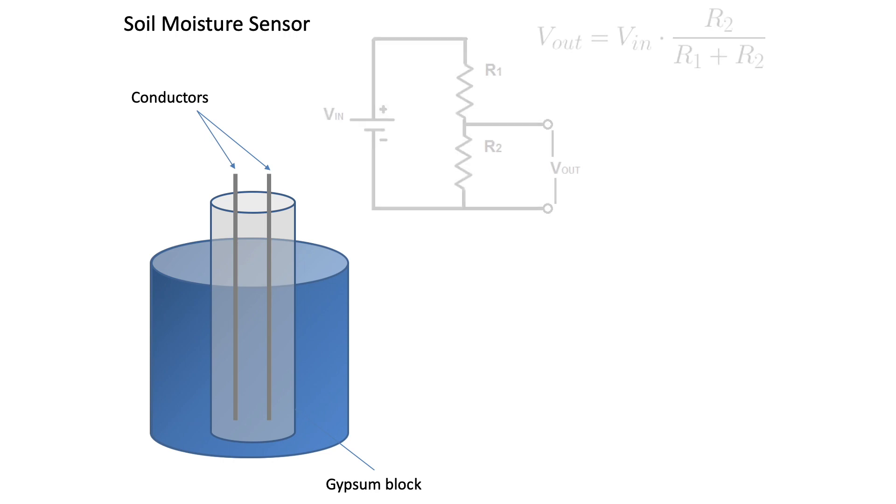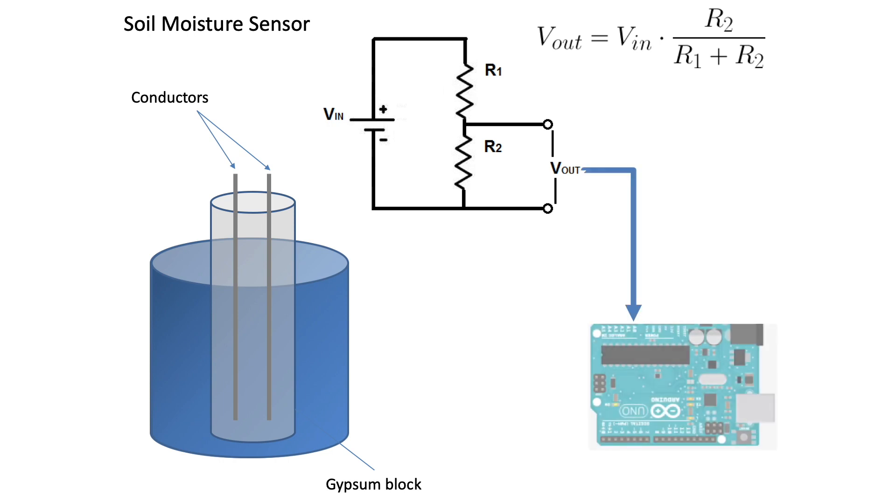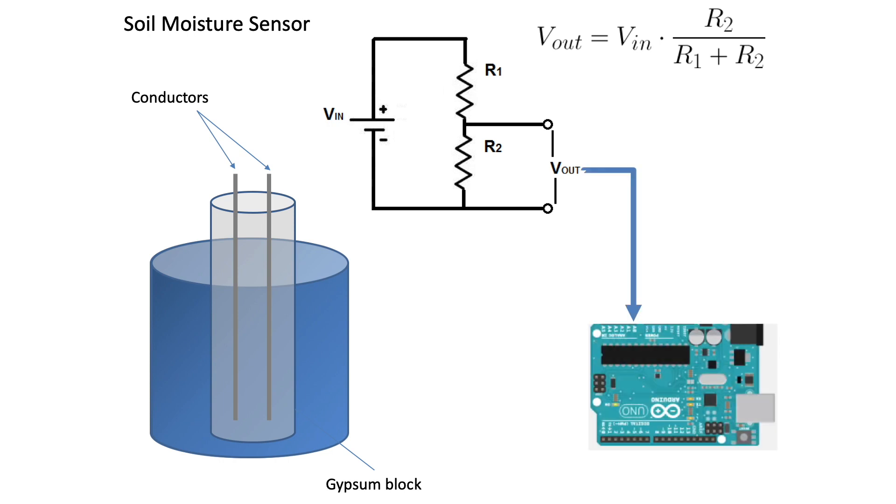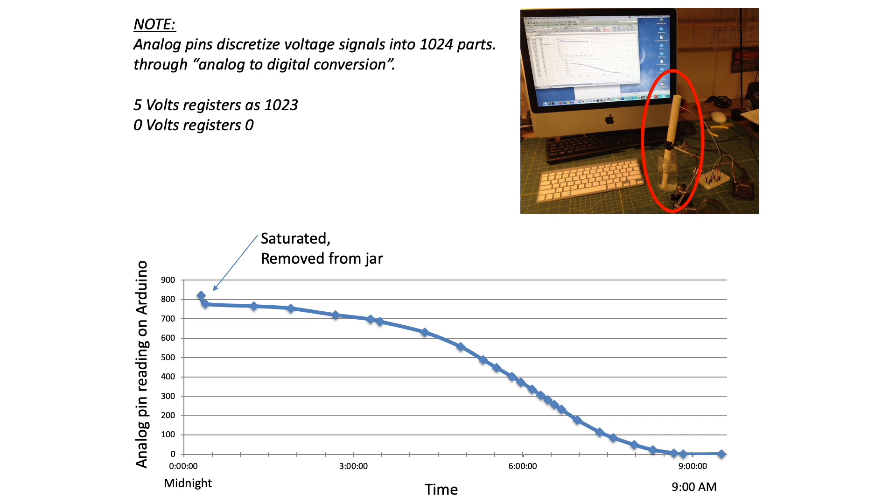If this block is embedded in a voltage divider circuit, the voltage across these conductors will change as a function of the gypsum's moisture content. The voltage state can be measured by an Arduino, which in turn can be transmitted by a Fona to a remote database or Internet of Things website like ThingSpeak.